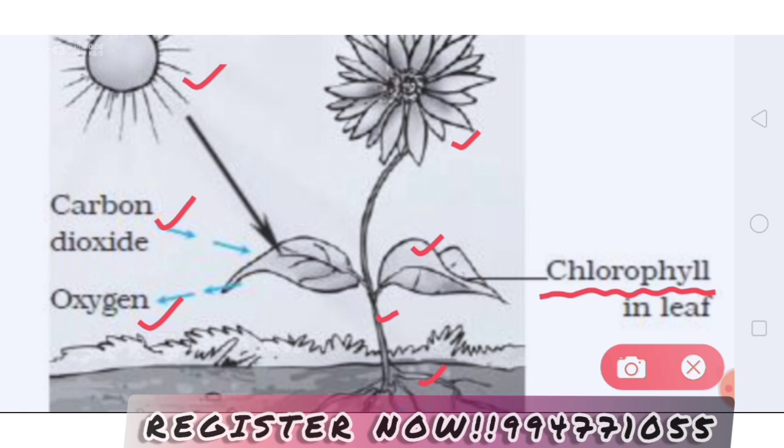The food that plants actually make is glucose. Glucose — that is what they produce. Or you can say carbohydrates — they produce carbohydrates. Plants produce carbohydrates.